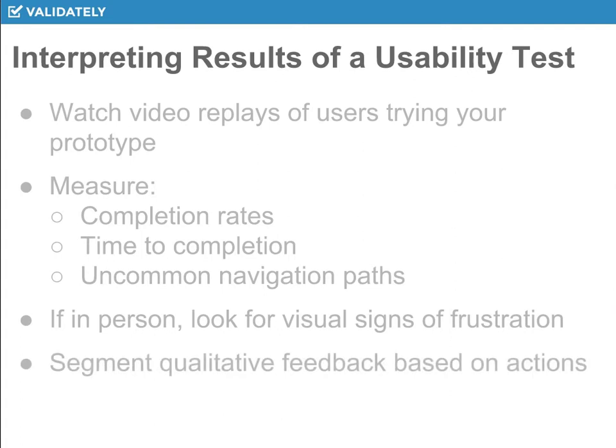And last, if you're asking for qualitative feedback after people go through — different types of questions after people go through the prototype — make sure that you segment the feedback based on the user's actions. Don't just look at overall information. For example, let's say you have five people go through a test: three people complete the task, two people don't complete the task.